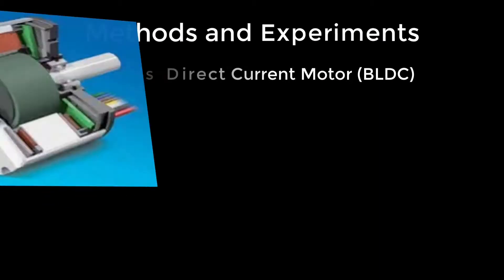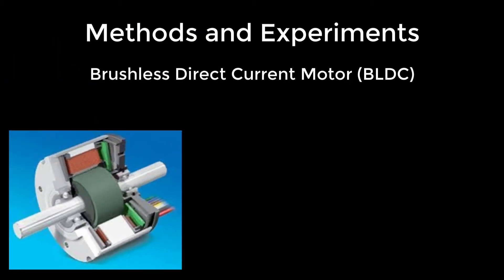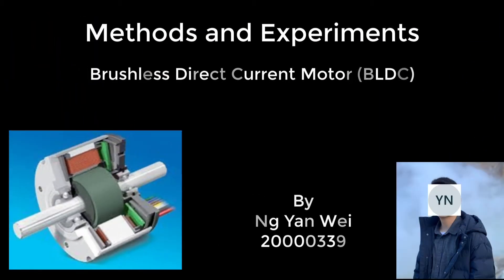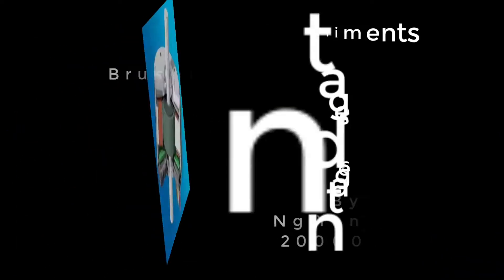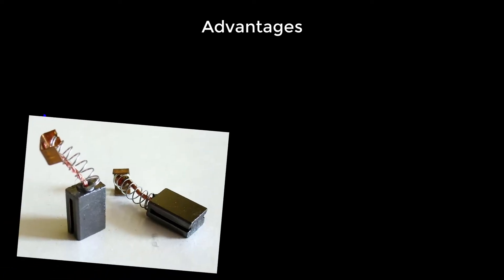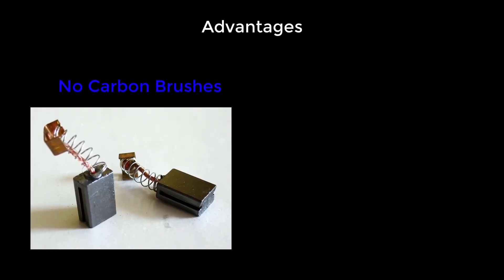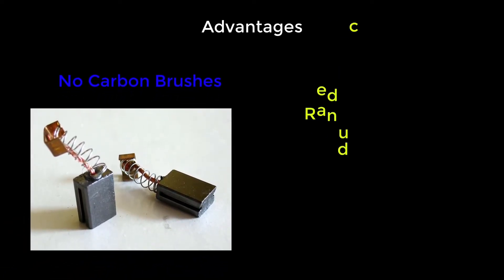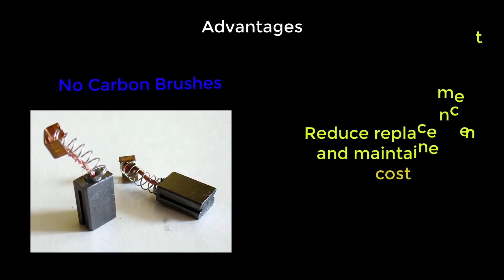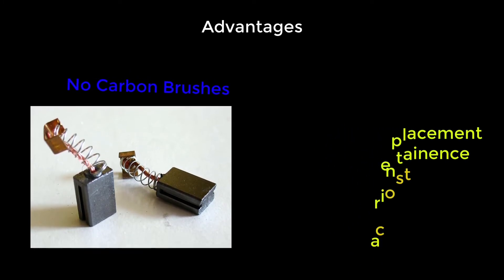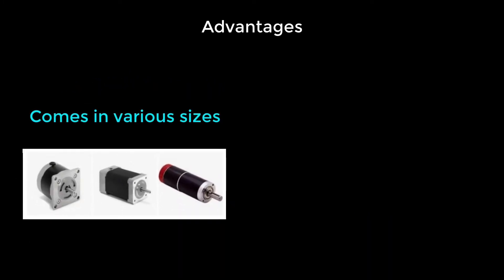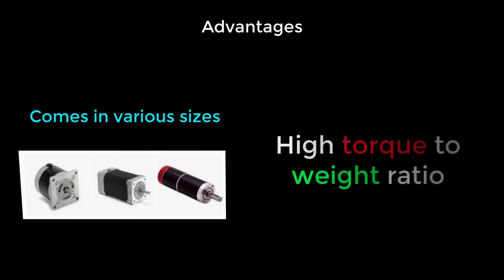When looking at the methods and experiments, it can be concluded that the brushless direct current motor has its own advantages as well as disadvantages. Looking at its advantages, one of them is that it does not have any carbon brushes, which reduces frequent replacement requirements as well as maintenance costs. It is also available in small compact sizes and provides a high torque to weight ratio.